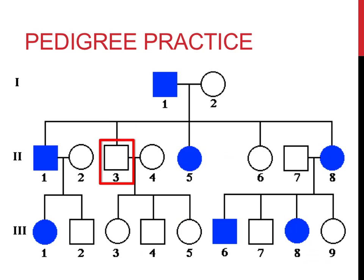The second question: is Roman numeral II, 3 a male or a female? Since this individual is represented by a square, this would be a male.